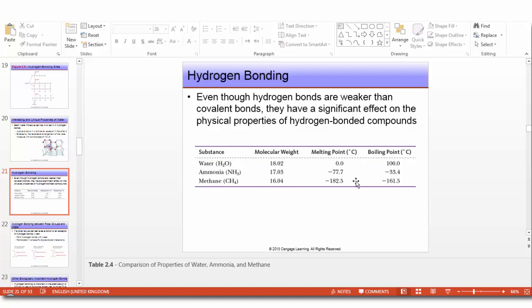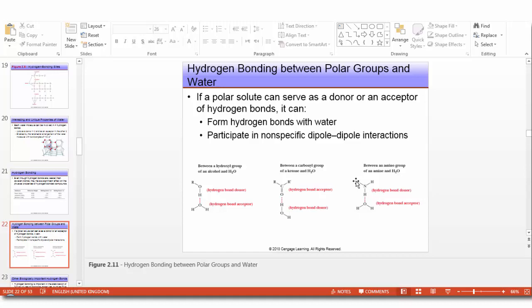Hydrogen bonding between polar groups and water: if a polar solute can serve as a donor or acceptor of hydrogen bonds, it can form hydrogen bonds with water and participate in non-specific dipole-dipole interactions. Examples include alcohol and water, ketone and water, and amine and water. Water can form hydrogen bonds with all these types.